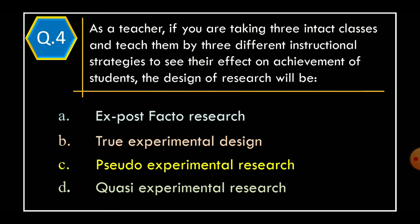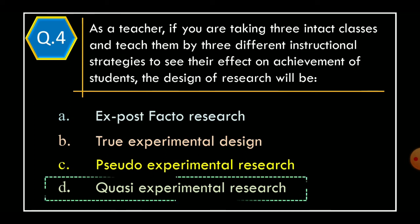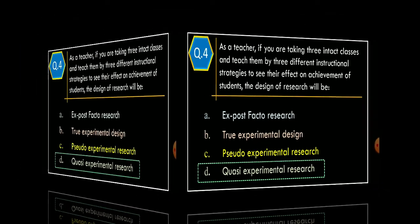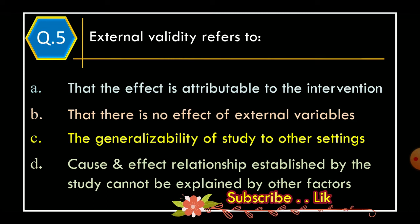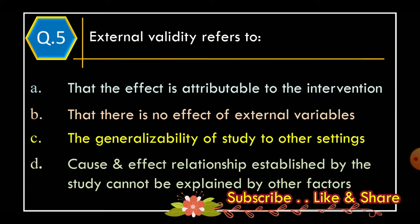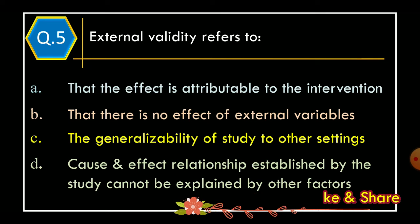And correct option is Option D: quasi-experimental research. Question 5: External validity refers to. Option A: that the effect is attributable to the intervention. Option B: that there is no effect of external variables. Option C: the generalizability of study to other settings.